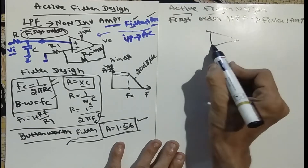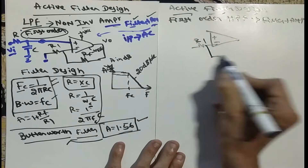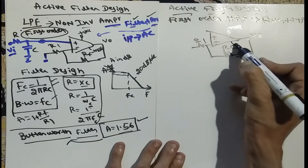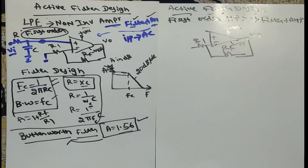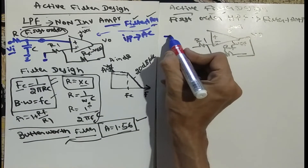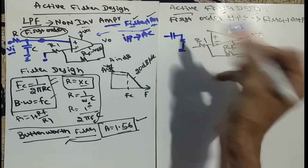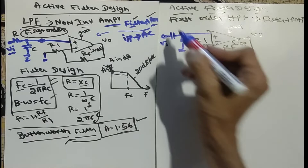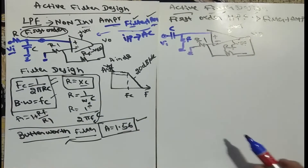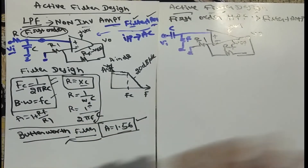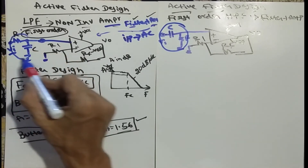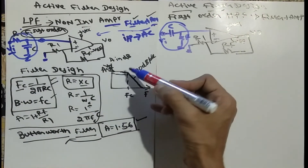Next we discuss the active filter design for the first order high pass filter. The amplifier circuit is similar to the low pass filter, with positive and negative terminals, resistor R1 and Rf connected to V0, with plus Vcc and minus Vee. The major change in the filtering portion is that here the capacitor comes first, then the resistance connected to ground — which is the vice versa of the low pass arrangement.